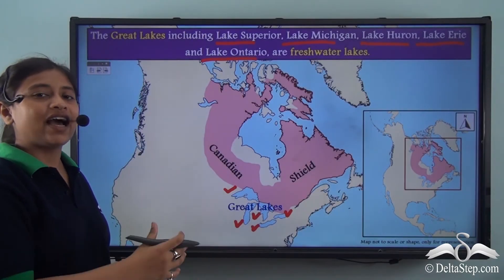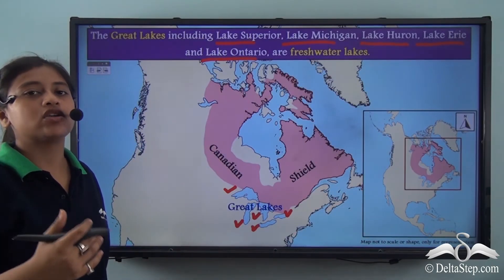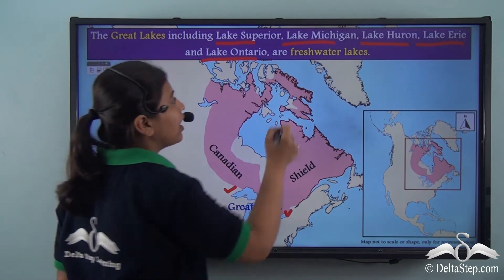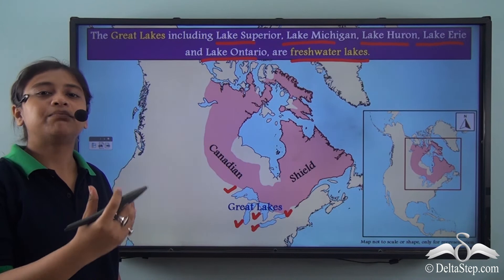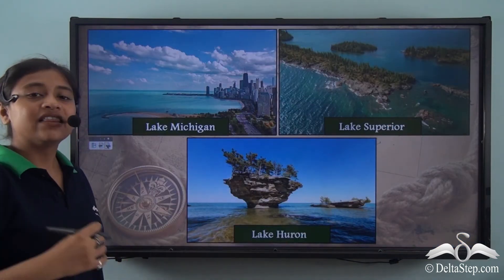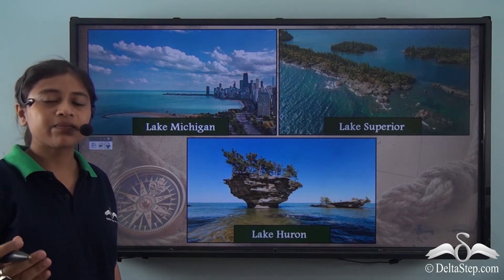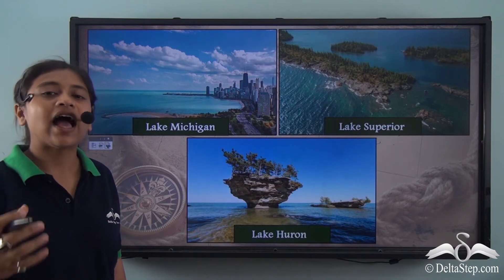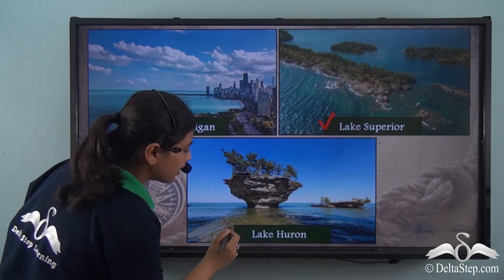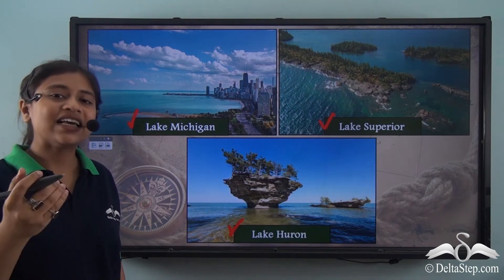The Great Lakes of North America lie just below the Canadian Shield, which is another important physical division of the continent. We must keep in mind that the Great Lakes are freshwater lakes. Most of the lakes within the Great Lakes are often known as inland seas because they show characteristics of sea — such as sustainable winds, strong currents, rolling waves, and distant horizons. Lakes like Lake Michigan, Lake Superior, and Lake Huron are among those referred to as inland seas.